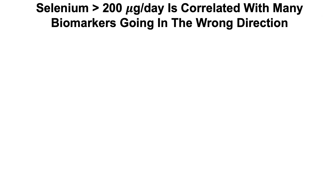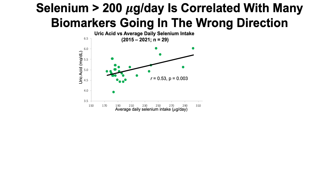Looking at my own personal data: I've been tracking my diet — weighing food and logging all macro and micronutrients since 2015, with up to 30 blood tests over six years. When I examine correlations between my selenium intake and blood biomarkers, including standard chemistry panel, CBC, homocysteine, C-reactive protein, and lipoprotein A, I see that when selenium intake exceeds 200 micrograms per day, several biomarkers move in the wrong direction.